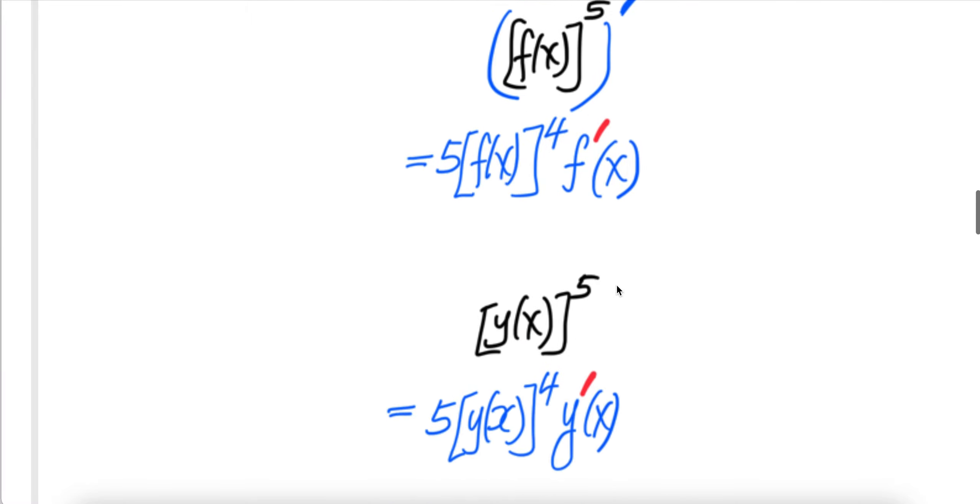5 comes, put a bracket with a prime. The derivative of that is 5 comes down and y to power x, 5 less 1 is 4 times the derivative.